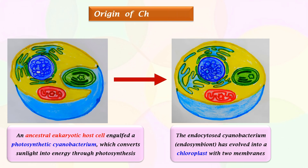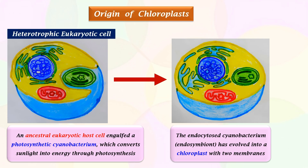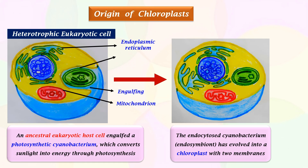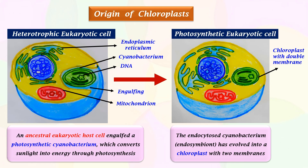Origin of Chloroplasts. This is the heterotrophic eukaryotic cell with organelles such as endoplasmic reticulum and mitochondrion. An ancestral eukaryotic host cell engulfed a photosynthetic cyanobacterium with DNA. It converts sunlight into energy through photosynthesis. The endocytosed cyanobacterium endosymbiont has evolved into a chloroplast with two membranes. As the endosymbiont is photosynthetic, the host cell emerged as a photosynthetic eukaryotic plant cell or algal cell.